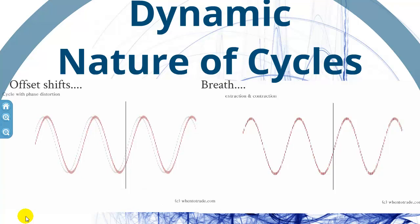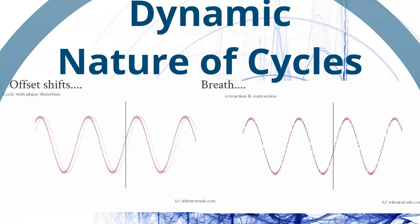The first effect I want to show you is the so-called offset shifts. This means we have cycles with phase distortion, and you see by the red moving cycle, it's still the same cycle as the gray one, but it's moving a little bit about the tops and the lows.